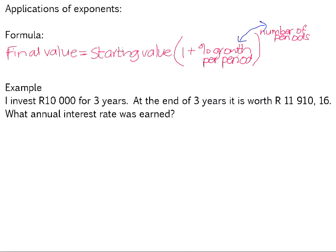So if your percentage growth is for a month, then your number of periods must also be in months. If your percentage growth is per annum or per year, P-A means per annum, which is basically just the Latin for saying for a year. And the number of periods must then also be in years.